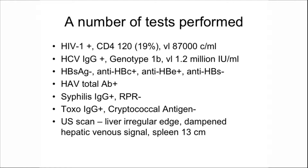He went on to have a number of tests. He did have an HIV test and was HIV-1 positive with a CD4 count of 120 at 19%, viral load 87,000 copies per ml. Hepatitis C IgG was positive, RNA positive at 1.2 million international units per ml, genotype 1B. Hepatitis B surface antigen negative, anti-core positive, anti-E positive, anti-surface negative. Hepatitis A total antibody positive, syphilis IgG positive, toxoplasma IgG positive, cryptococcal antigen negative.